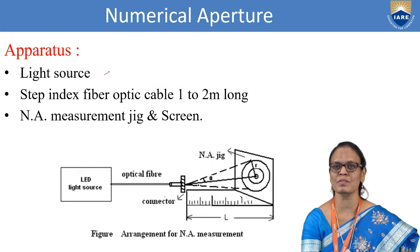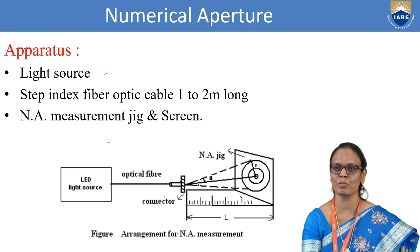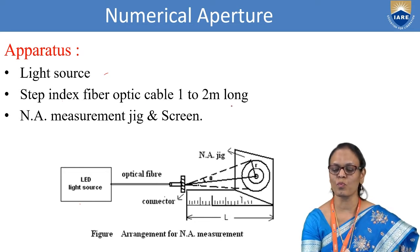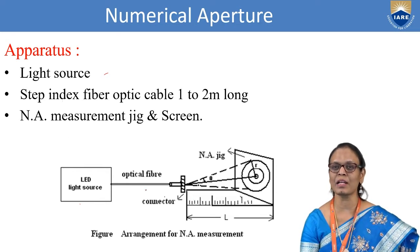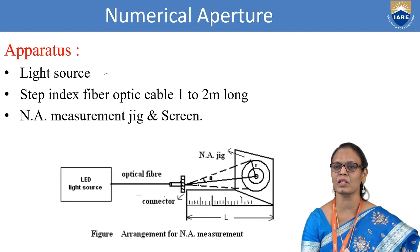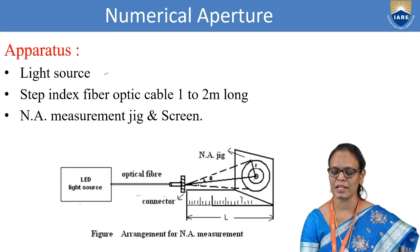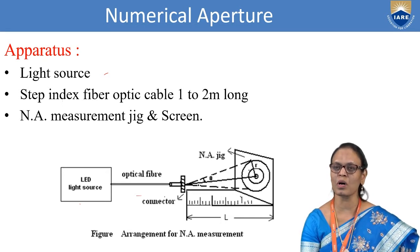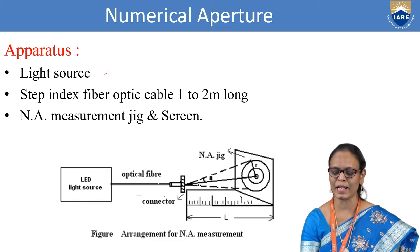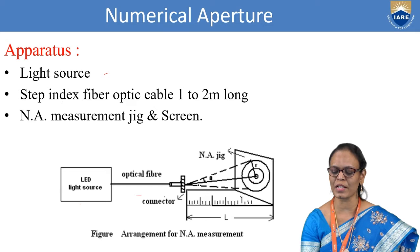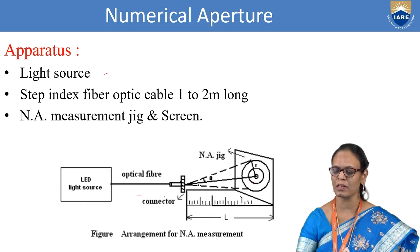The apparatus consists of a light source. We also have a step index fiber optical cable of 1 to 2 meters long — we have different types, step index and graded index fibers, and here we are using the step index fiber. And we have a numerical aperture measurement jig with scale-like graduations and a screen. There are concentric circles of fixed radius on the screen. Light from the source passes through the optical fiber and the output is captured on this screen.